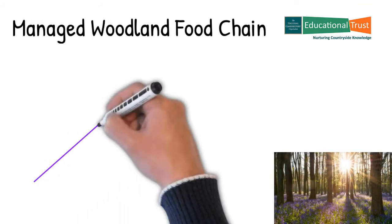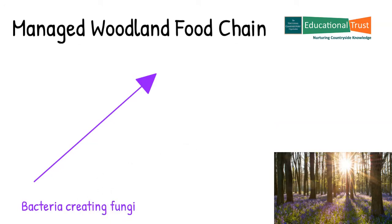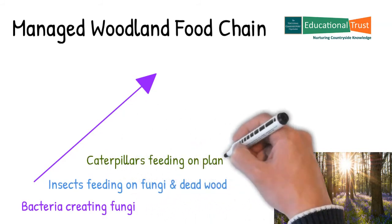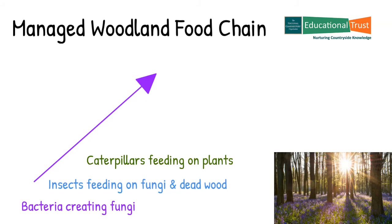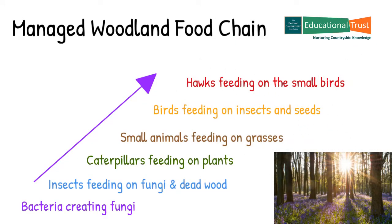In a managed woodland with a good four-tier structure we can discover a complete biodiversity food chain. At the bottom of the chain, bacteria creating nutrients for fungi; insects feeding on the fungi and dead wood; caterpillars feeding on the grasses, herbs and field layer shrubs; small animals feeding on the herbs and grasses; small birds feeding on the insects; and at the top of the chain, the hawks feeding on the small birds. Active management allows us to restore some of our declining native species, and a managed woodland can support hundreds of individual species — a true biodiversity wonderland for us all to enjoy.